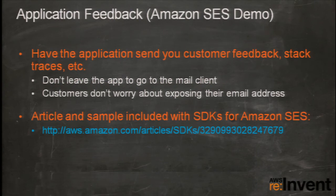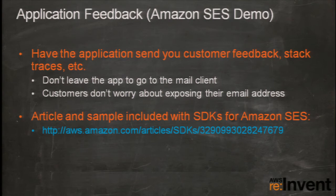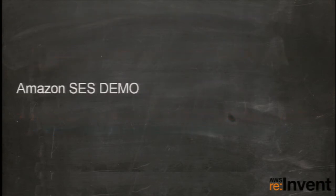We have about eight samples total in our SDKs using various services. Another service we support is Amazon SES — the Simple Email Service — which allows you to send email from your application without having to interface with the phone's mail app. Instead, you can send email behind the scenes, which is good for sending feedback to you, capturing errors, or similar tasks. We have an article and a sample for this, and Bob is going to walk us through a demo.